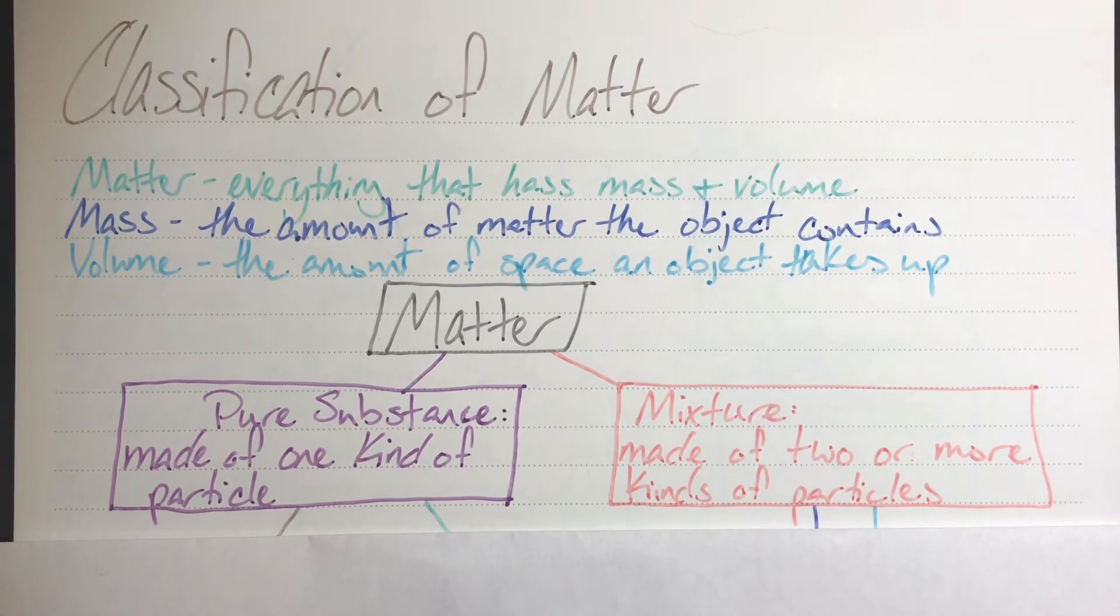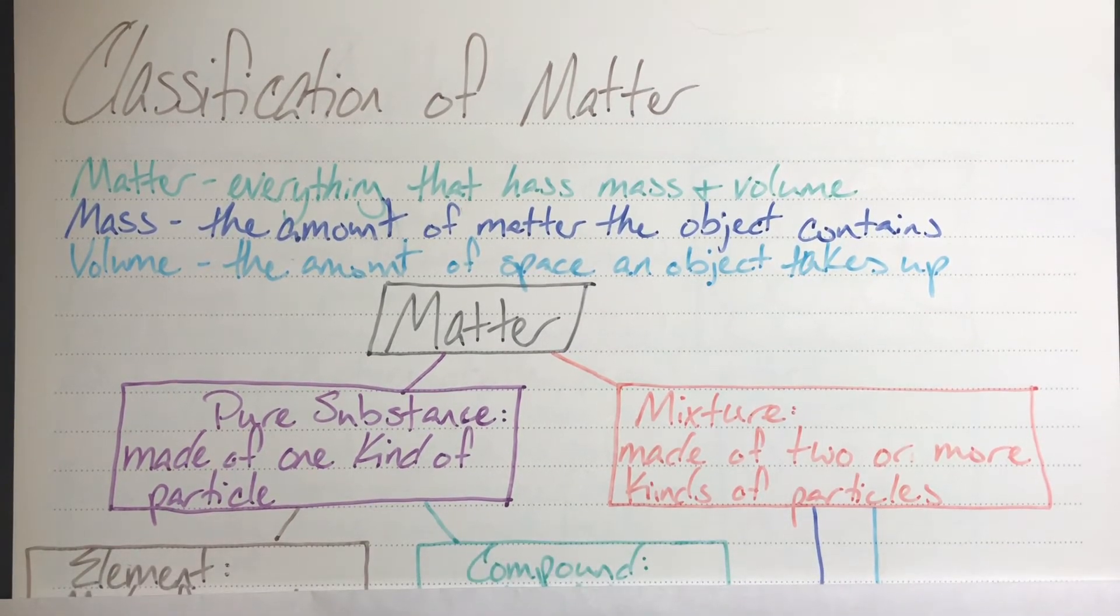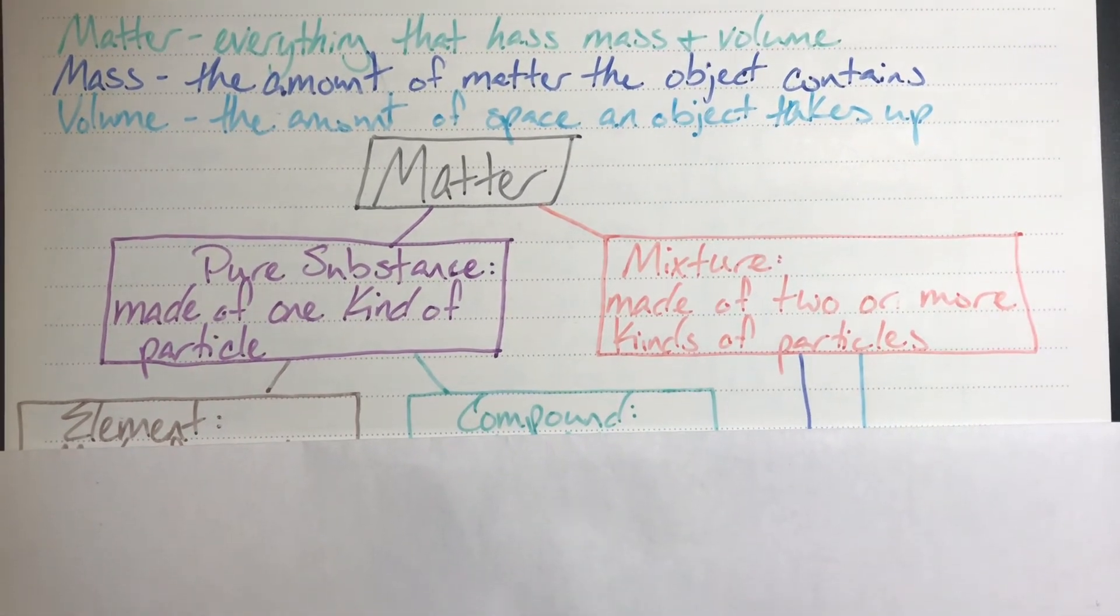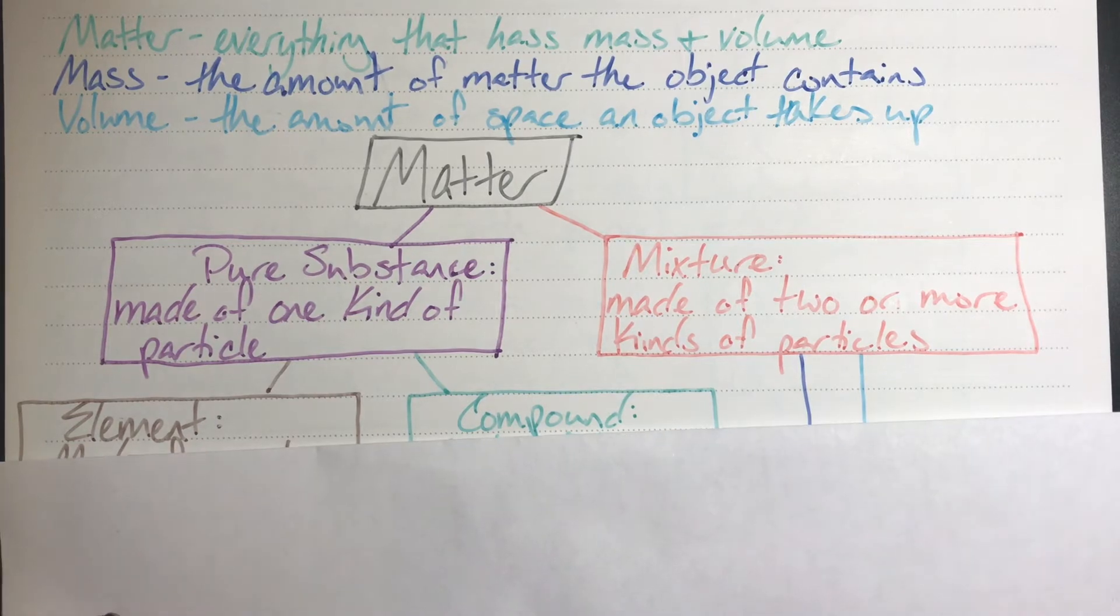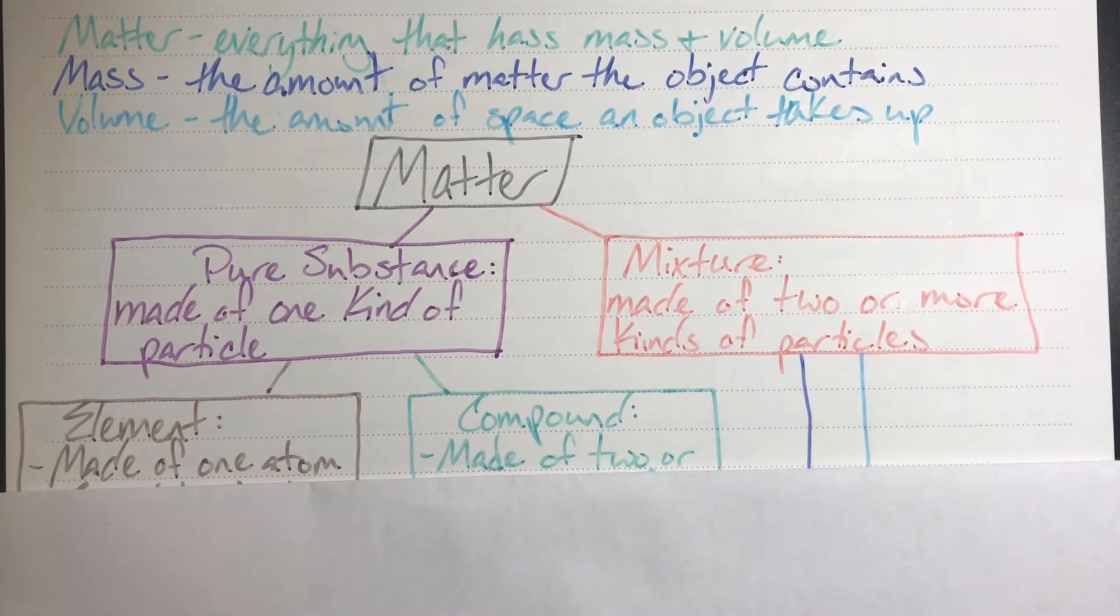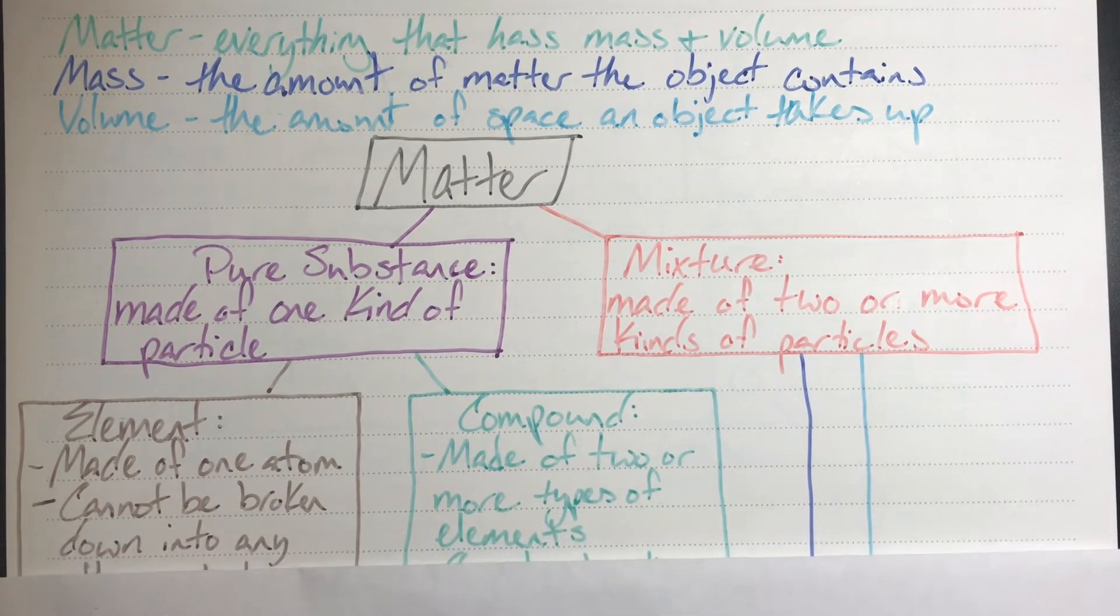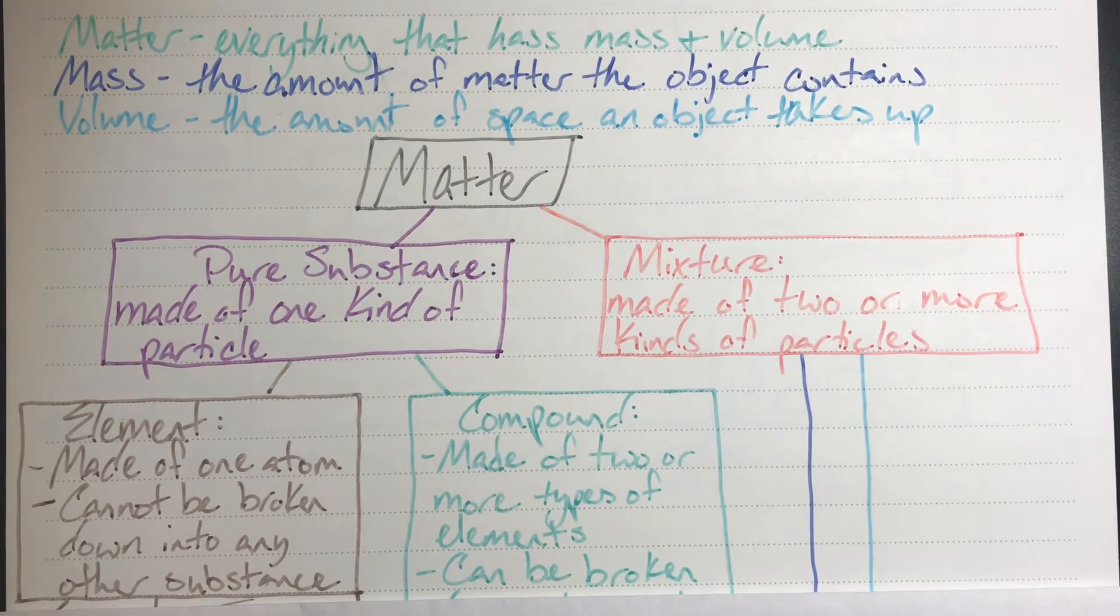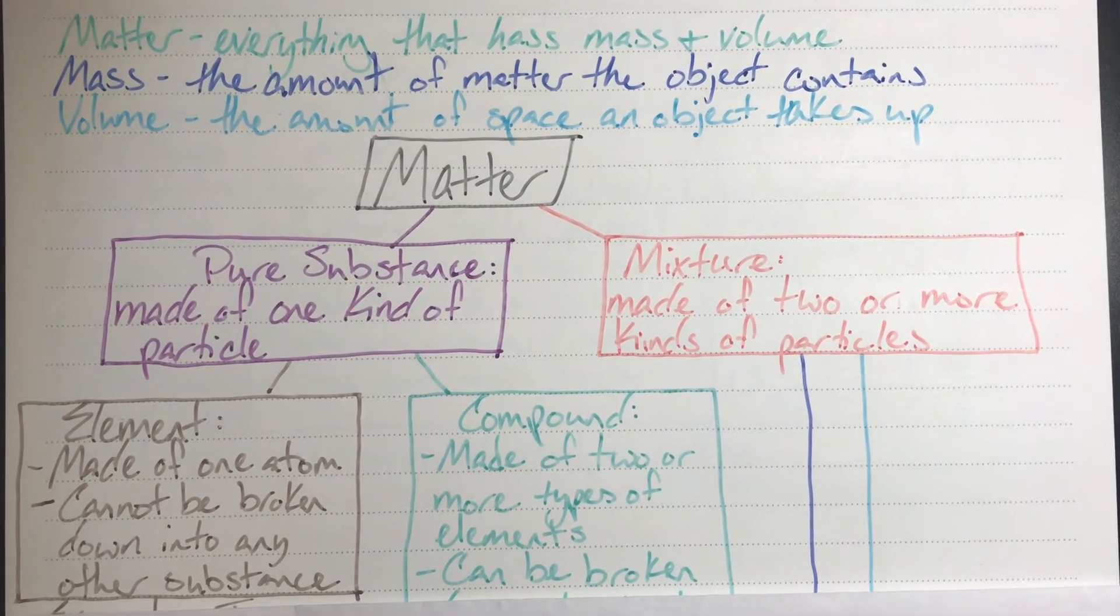We're going to be exploring pure substances first, and they can be split into a couple of different options. You can either be an element or a compound. Elements are made up of one type of atom which cannot be broken down into anything more simple, whereas a compound is made up of two or more types of elements.